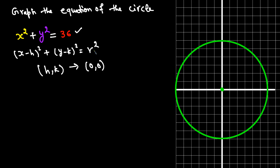Comparing R² with 36 gives R = 6. From the origin, go 6 units in each direction — left, right, up, and down — and draw a circle through those four points. That gives you the circle with radius 6.